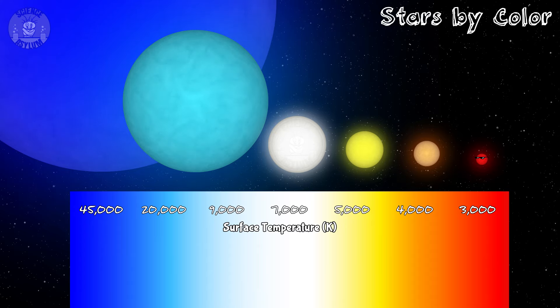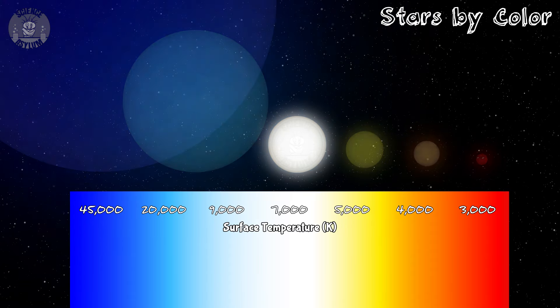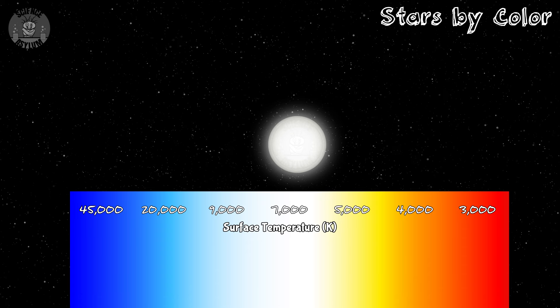In temperature order, stars go from red to blue. But where we'd expect to have a green star, we have a white star instead. Why though?